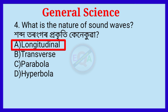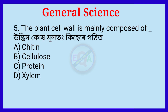Question number 5. The plant cell wall is mainly composed of. Udvidar kuh bear mulata ki hai guthita. Option B: Cellulose.